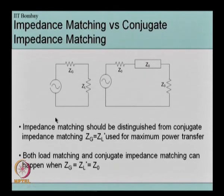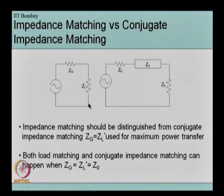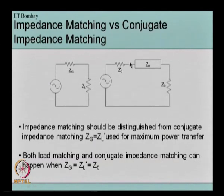Matching is different from conjugate matching. Conjugate matching is a concept frequently used in lumped element circuits relating to maximum power transfer to the load: maximum power is transmitted to the load when the source impedance Z_g is the conjugate of Z_L. But matching in the transmission line sense is the case when there is no reflection at the load end — these are two different concepts.